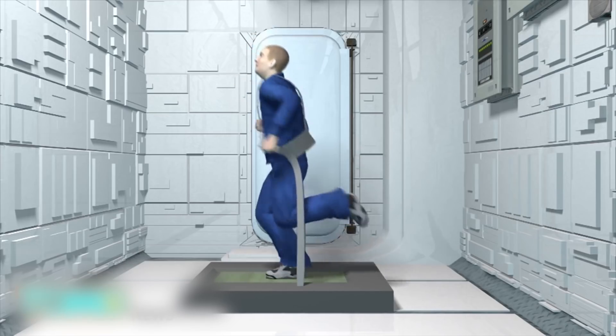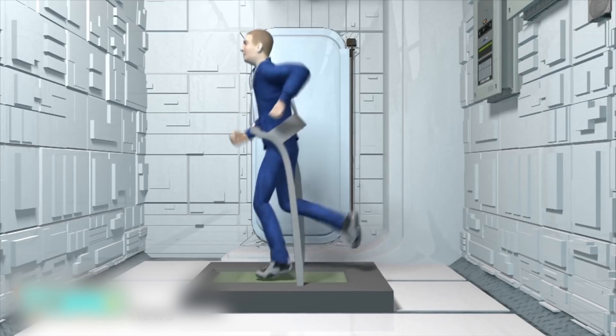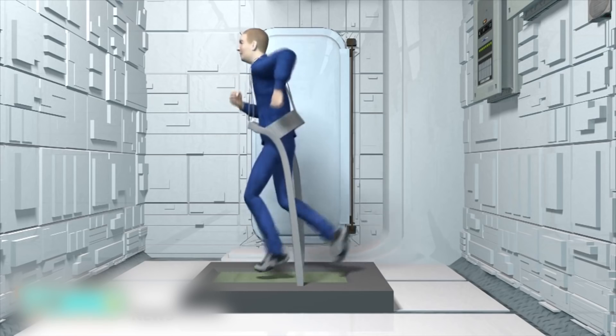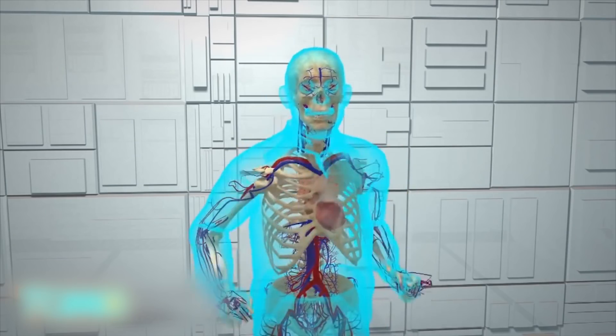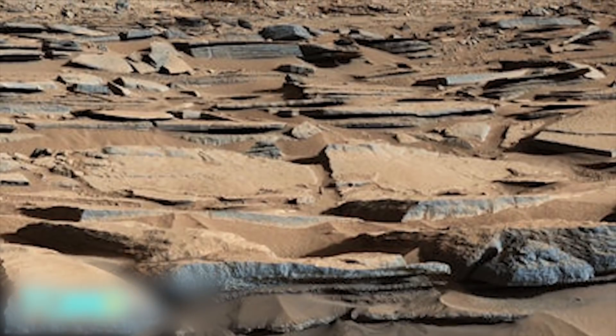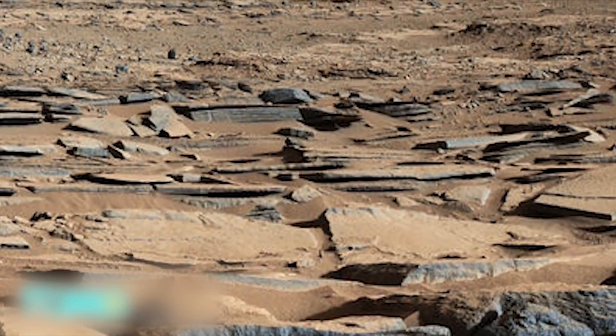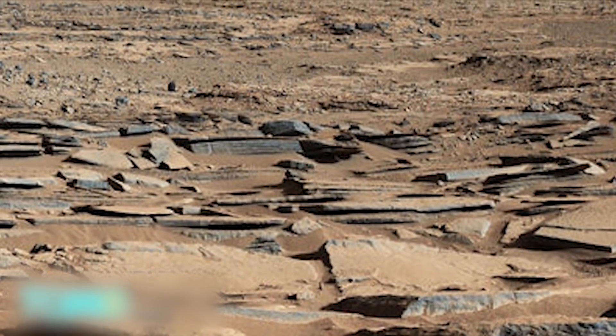While exercise aboard spacecrafts may help humans retain muscle and bone mass, astronauts have still been recorded losing a significant amount during travel. Other effects of space travel on the human body include changes in the circulatory system and the immune system. Meanwhile, even after humans do make it to Mars, they will still need to battle significantly lower temperatures and a thin and low-pressure atmosphere.